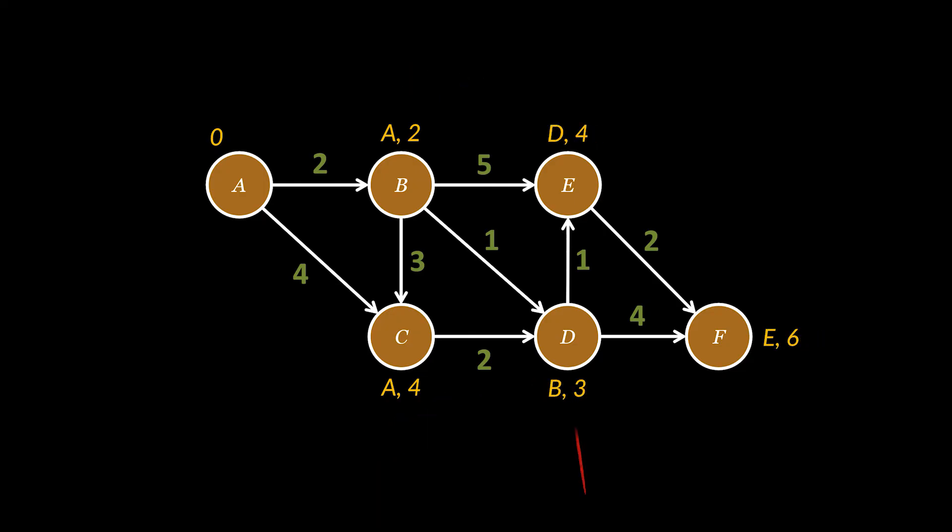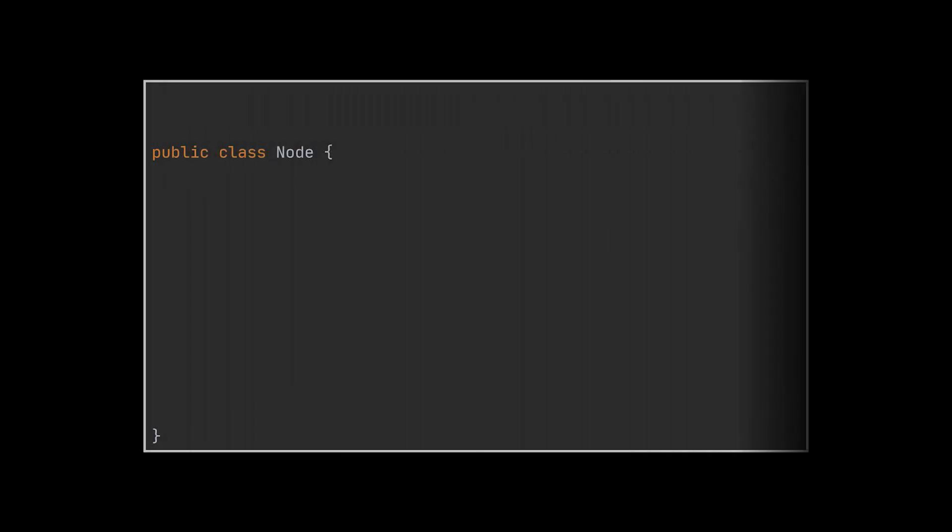After repeating this process on all the available nodes, we will be able to calculate the minimum distance and path from A to all of the graph nodes. Let's go ahead and try to implement this algorithm and I guarantee after this things will be way clearer.